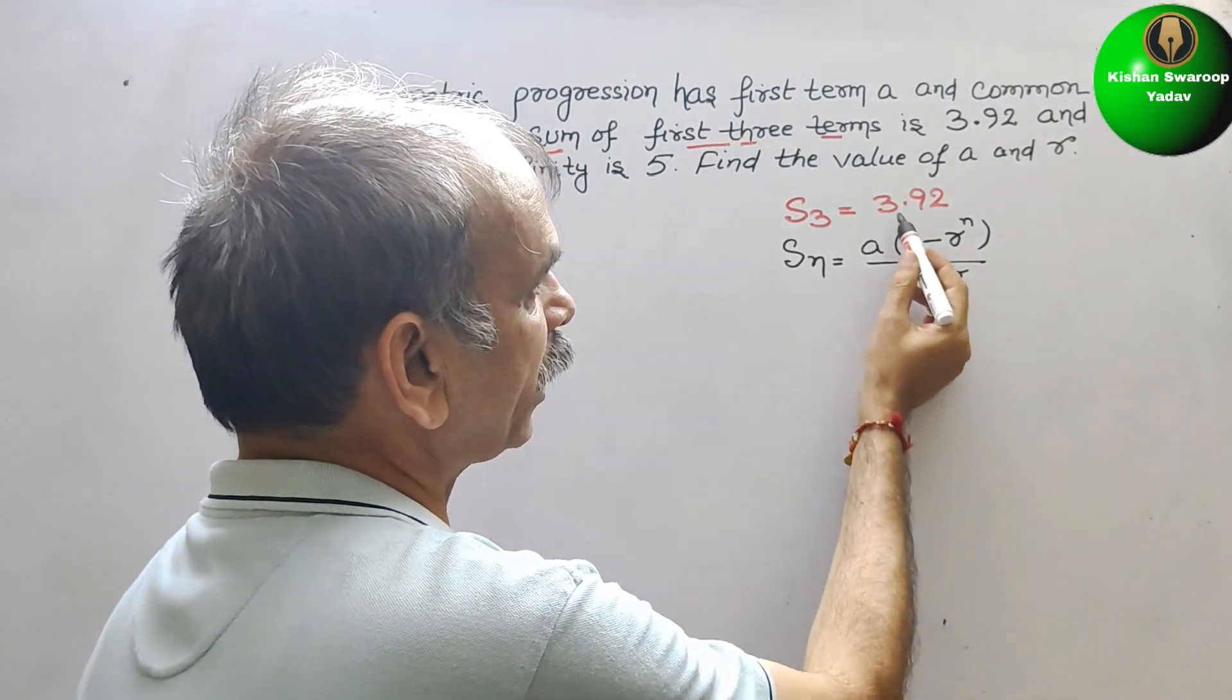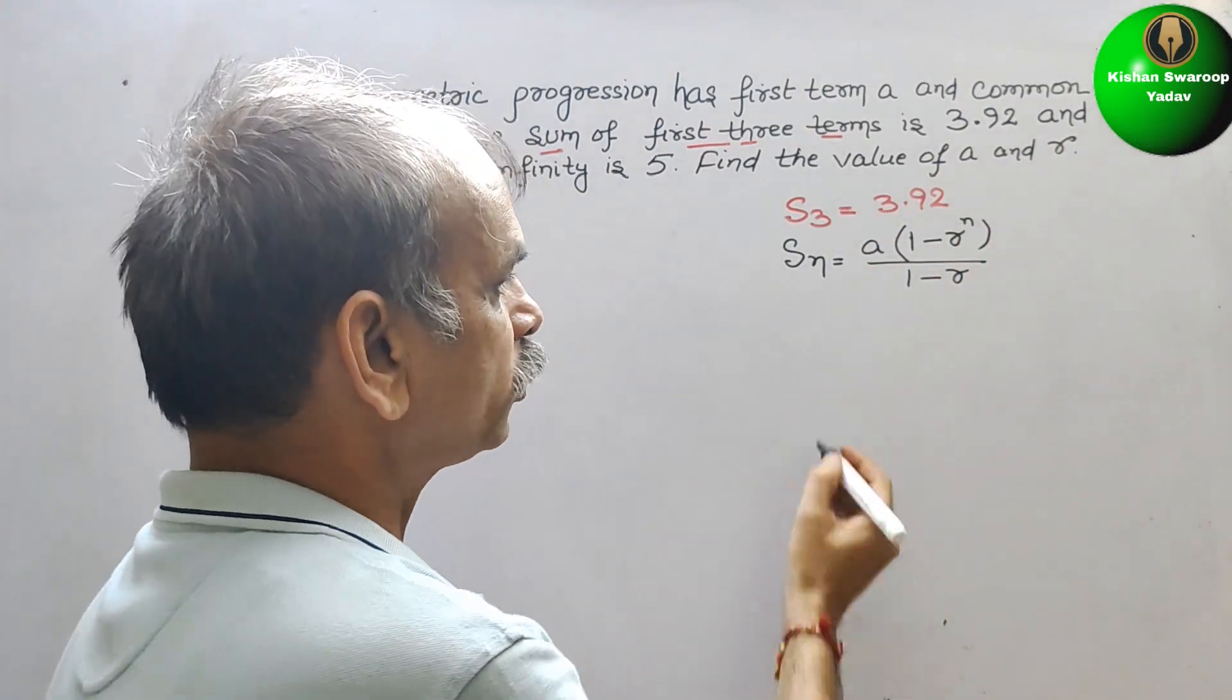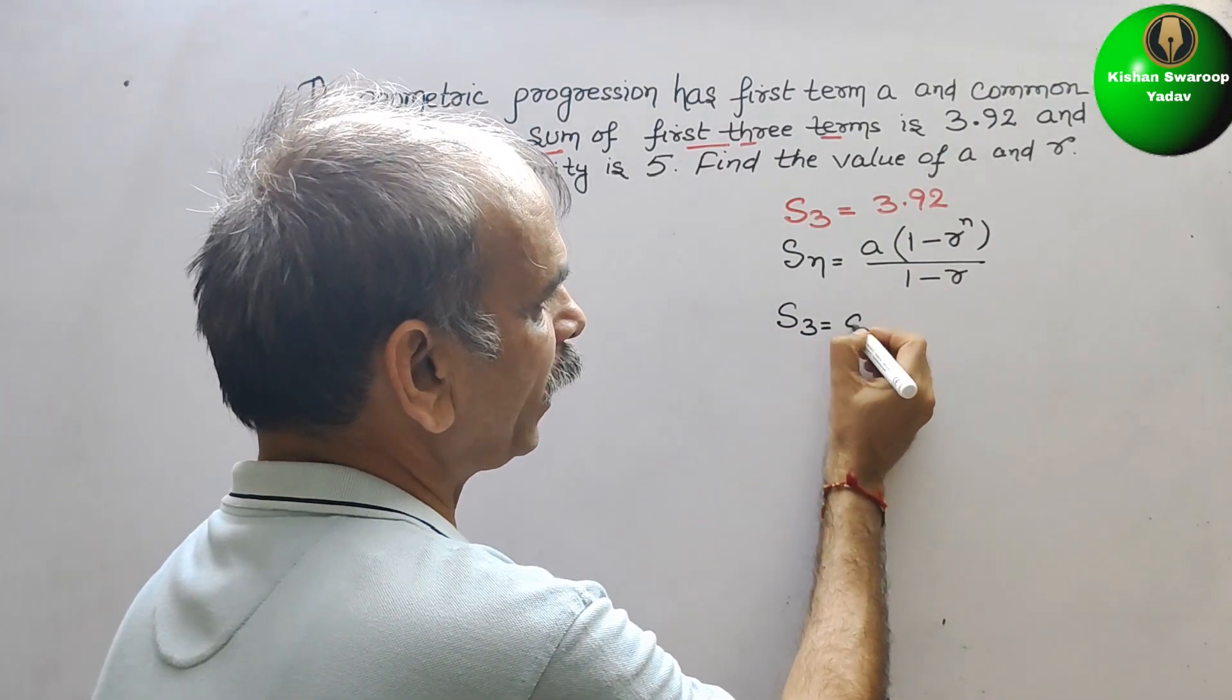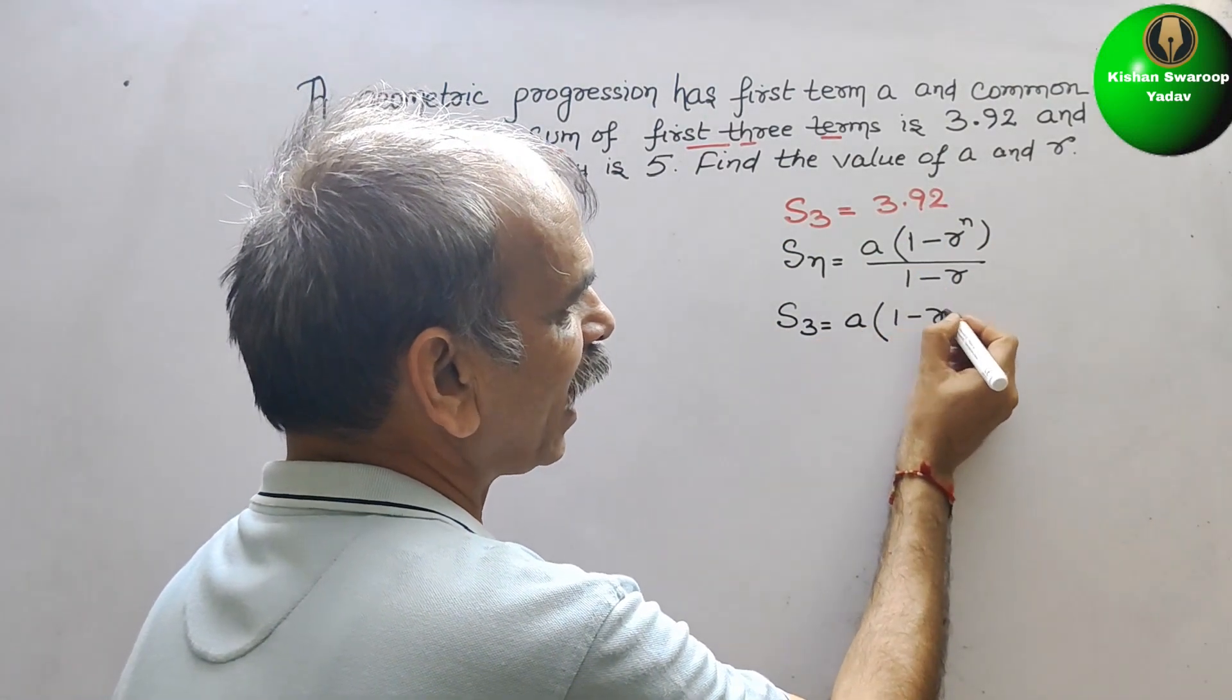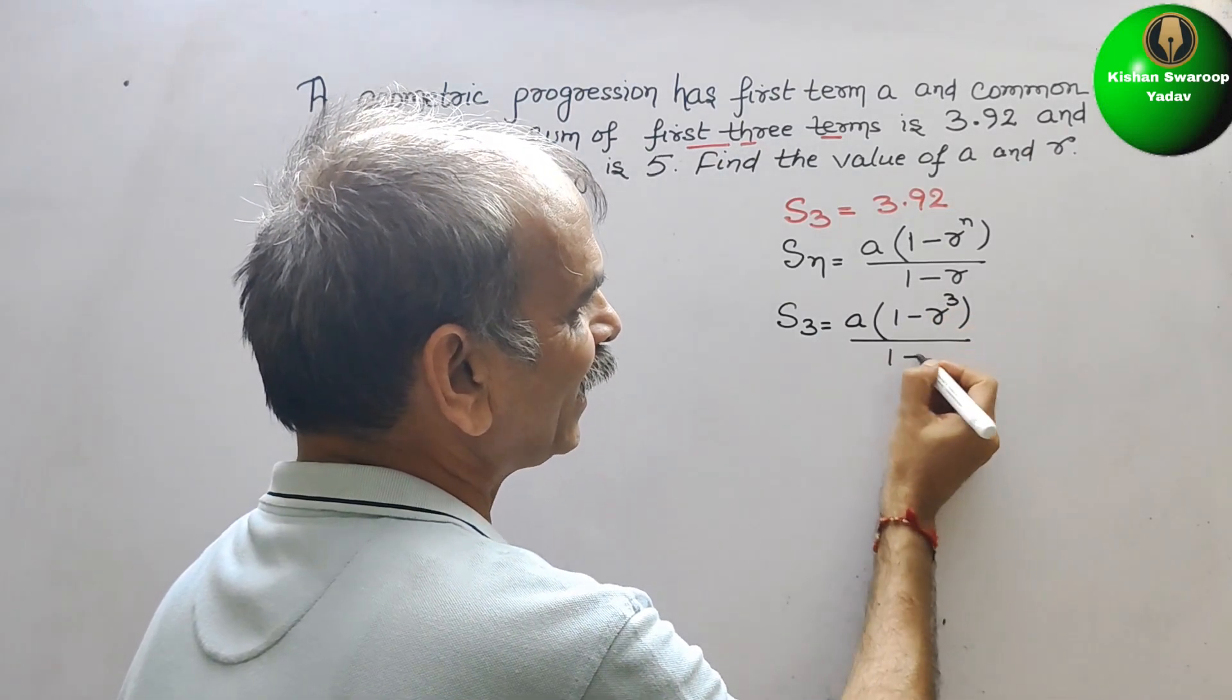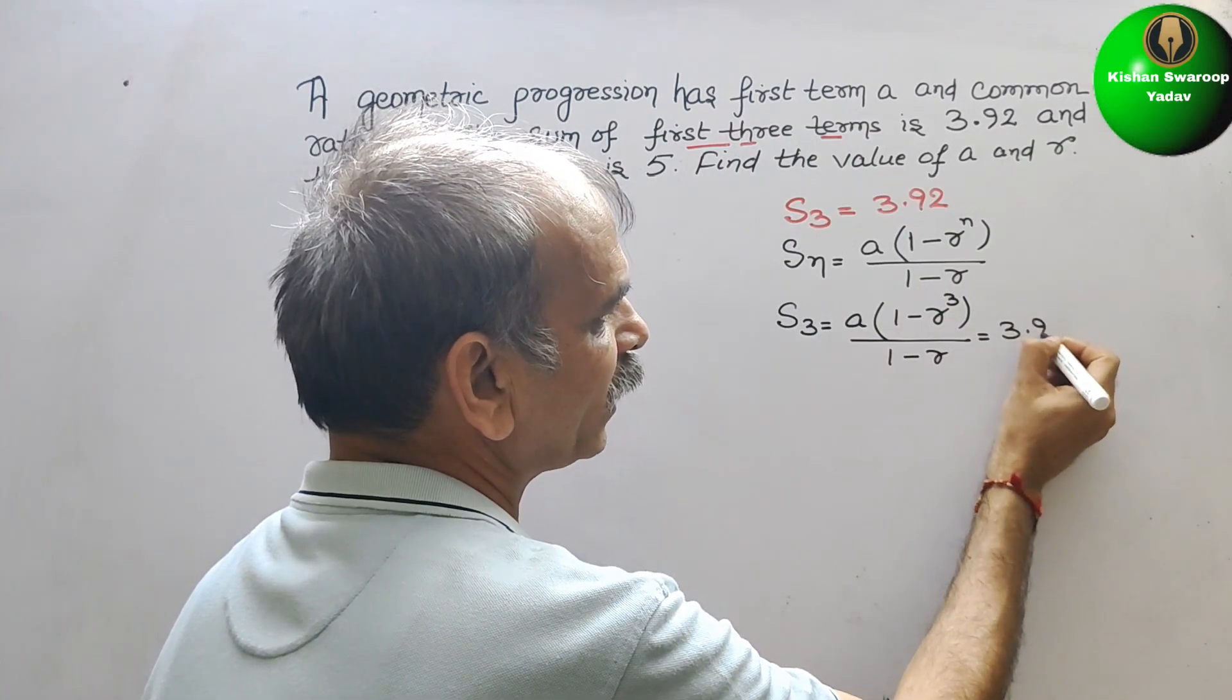This is equal to what they have given you. That means n is 3 now. So now it will be S3 is equal to A times 1 minus R cube by 1 minus R. That they have given you 3.92.